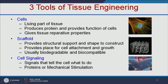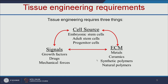The third tool is cell signaling — growth factors or hormones that tell the cells whether to differentiate, and what kind of cells to differentiate into. These are the three things required for tissue engineering.